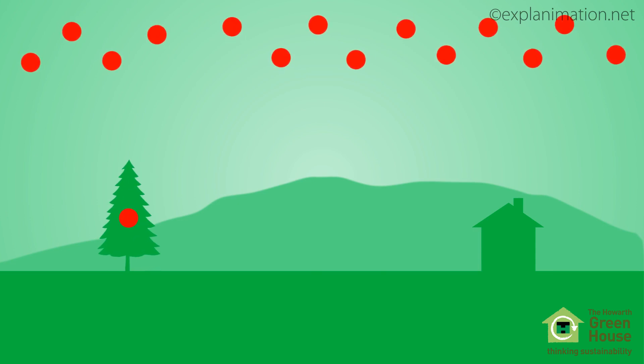The carbon from that CO2 is trapped within the tree. Firewood is harvested and transported to the house. This process produces CO2 emissions and we will come back to these later.